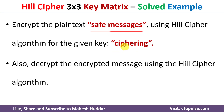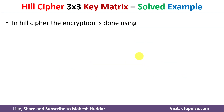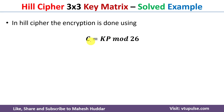Once you get the ciphertext, we need to decrypt it back into plain text using the Hill cipher algorithm. In Hill cipher, encryption is done using the formula C = K·P mod 26, where K is the key matrix, P is the plain text, and C is the ciphertext.